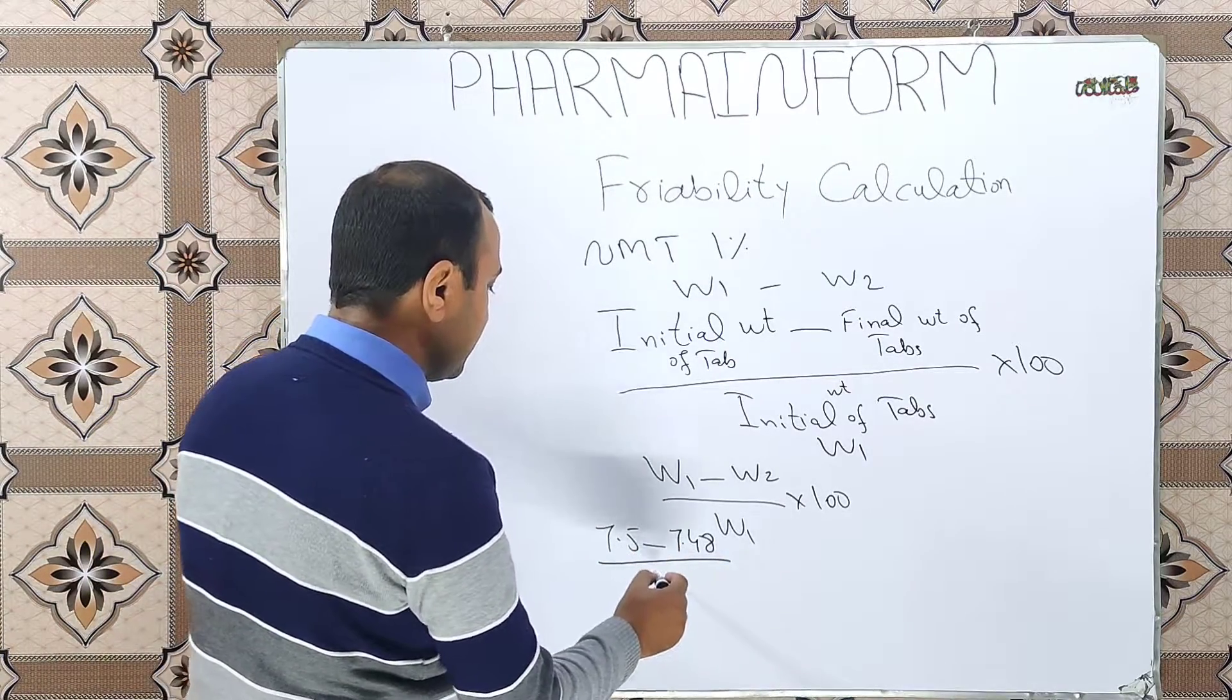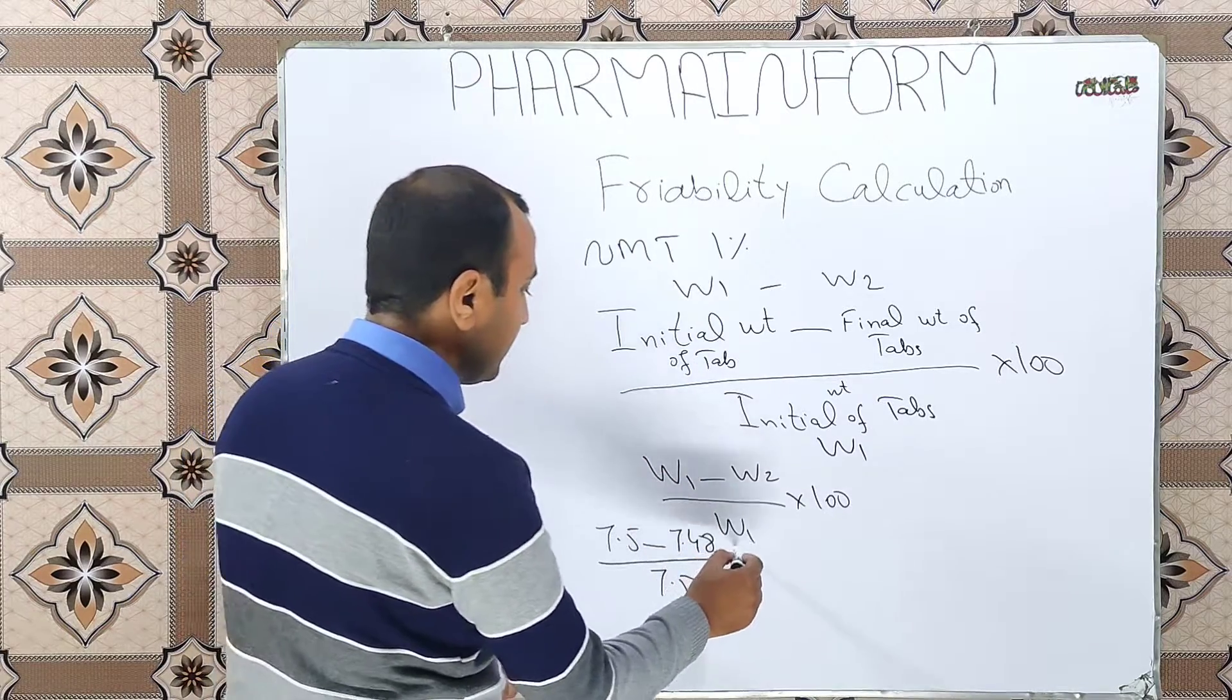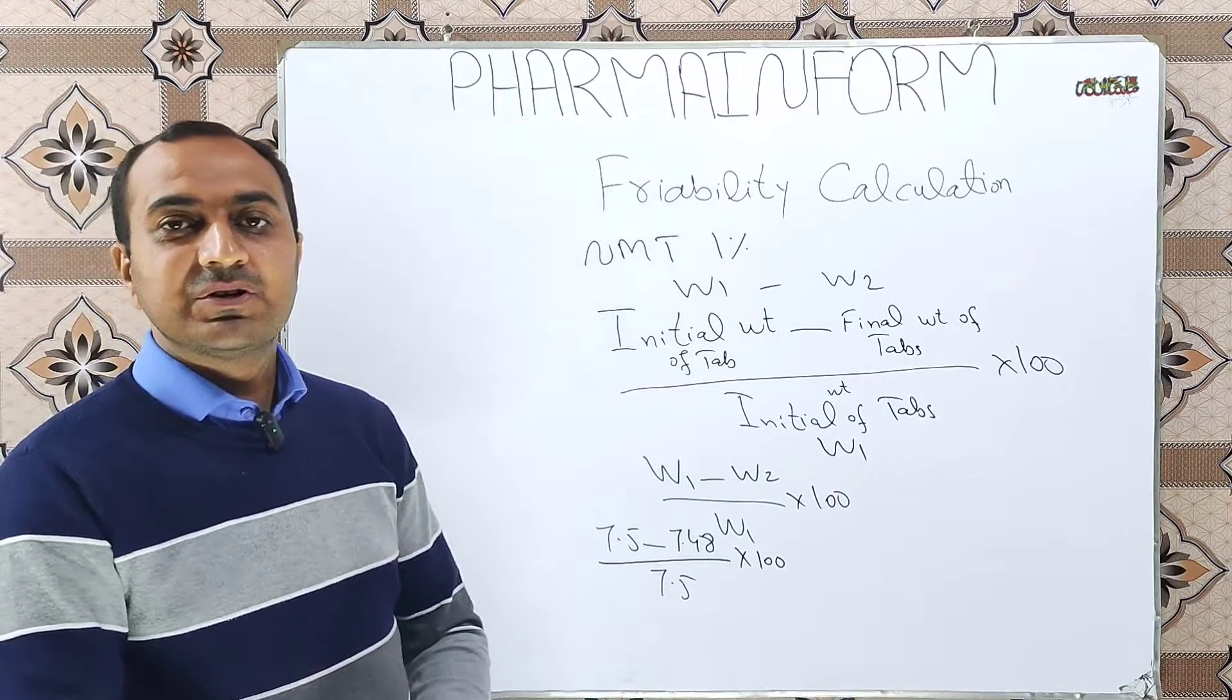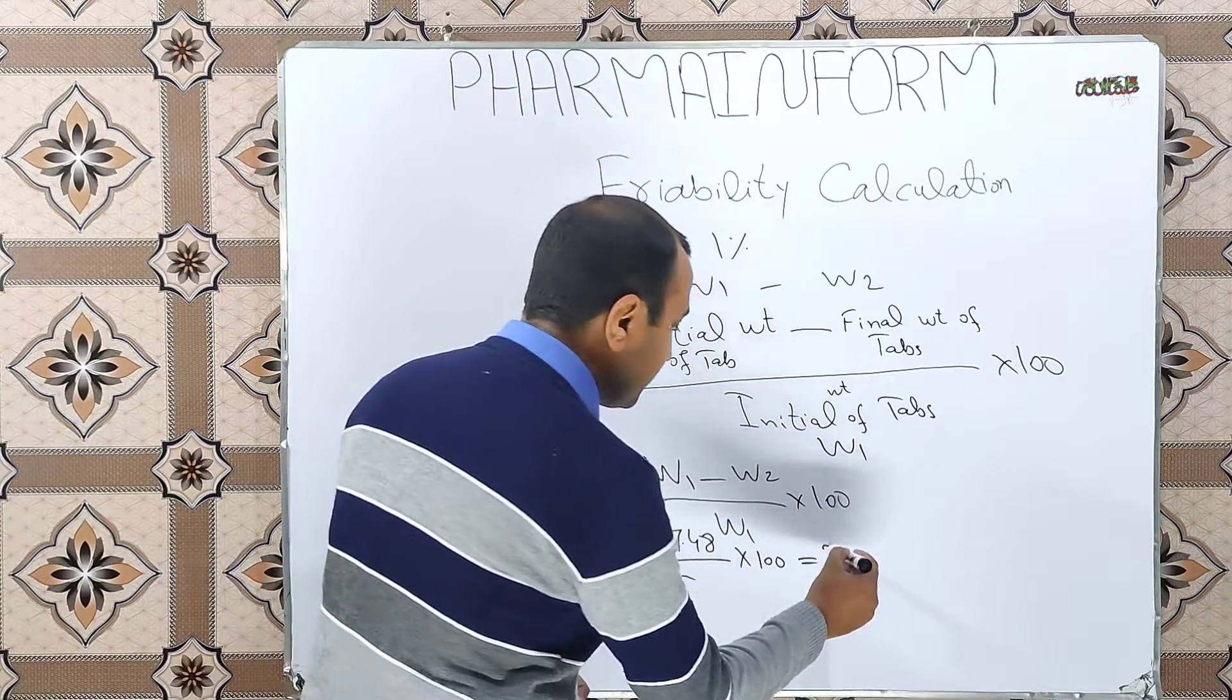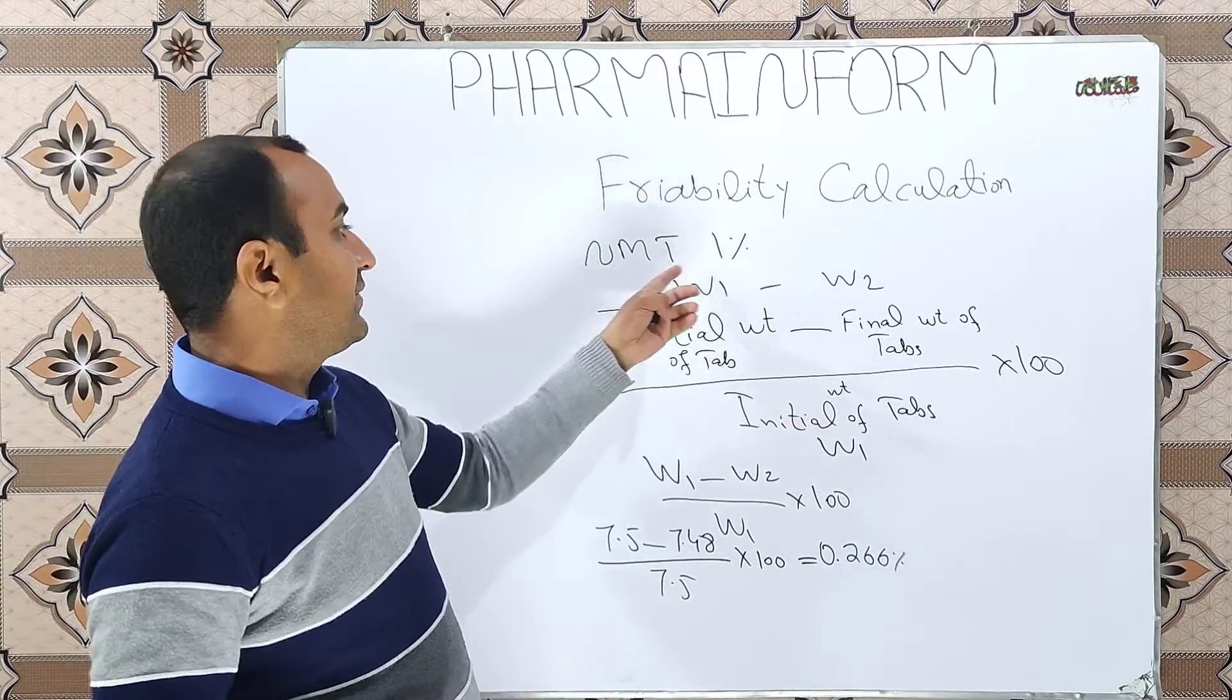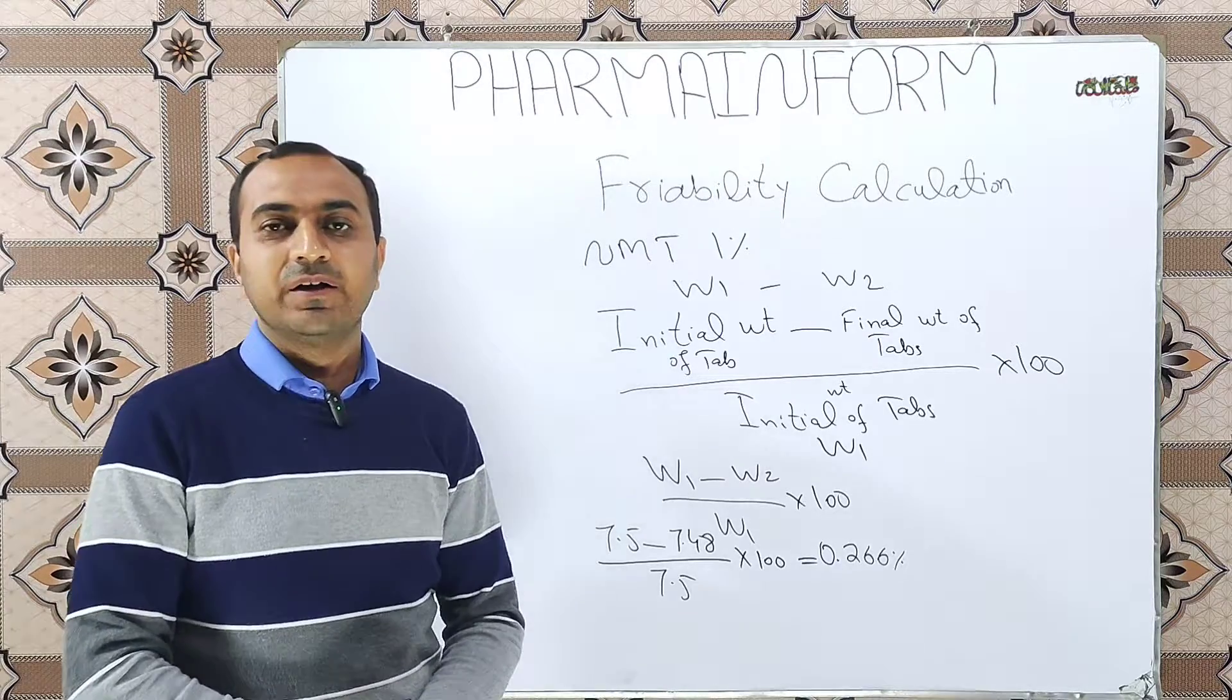Now we will subtract 7.48 from 7.5, divide it by 7.5 which is the initial weight, and multiply it with 100. When you solve this equation or this formula, the answer will be 0.266%. So our value is less than 1%, so our friability test is considered passed.